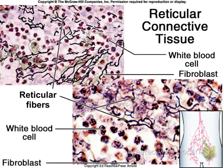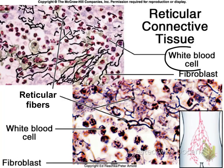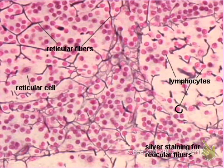Reticular connective tissue is reminiscent of Japanese cherry blossoms — the reticular fibers are like the branches of the cherry blossom tree, and the blossoms are the reticular cells. Fibroblasts are also present because they make the reticular fibers. A few white blood cells are scattered throughout, appearing slightly lighter in color. In the diagrams, the reticular fibers are the small branches scattered throughout, with reticular cells and lymphocytes distributed among them.